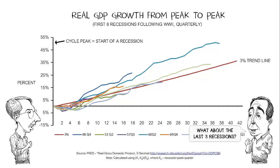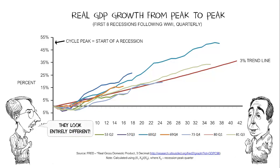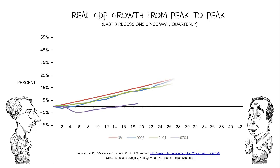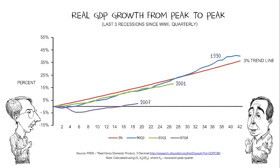What about the last three? They looked entirely different. The same kind of graph, except we have here the last three: 1990, 2001, and 2007. Remember, that's a reference to the cycle peak, so 2007 Q4 is the cycle peak.